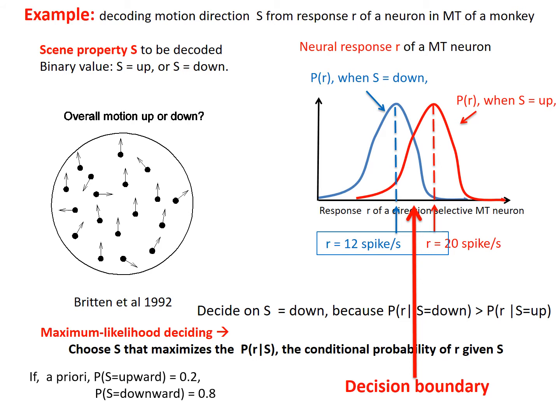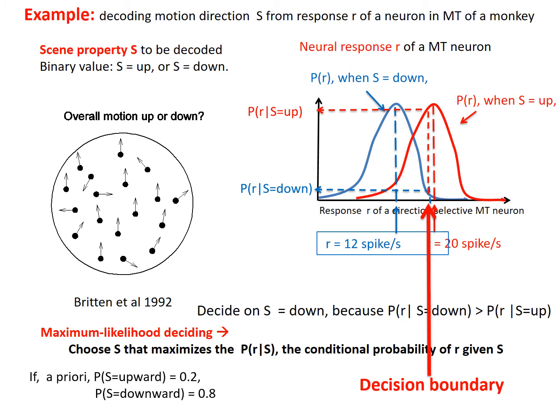If a priori we know that the chance for motion to move upward is only 20%, then when the response R is at the decision boundary of 16 spikes per second, we will prefer to say that the downward motion is a better decoded solution. We will shift the decision boundary a bit to the right so that only when response R is really much larger will we start to prefer the upward motion direction. Therefore, this prior knowledge makes us bias the decoded decision and shift the decision boundary.